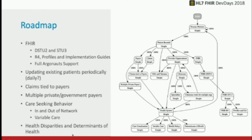On the roadmap: we have FHIR DSTU2 and STU3 today, and we're going to move to R4 — I was waiting for it to become as stable and normative as possible. Another area is producing patients who adhere to certain profiles — you bring your profiles and implementation guides to CYNTHIA and say 'when you output data, use these profiles.' That's a hard problem because you need to know what the profiles mean and whether what you're generating aligns with them, but there may be tricks that can be done.